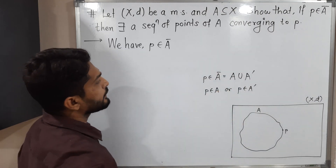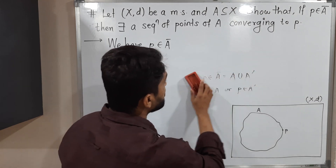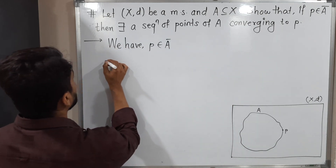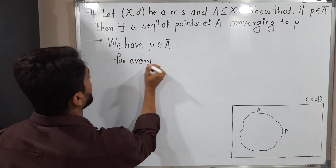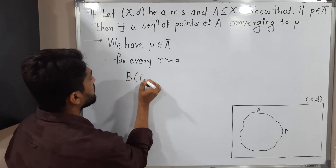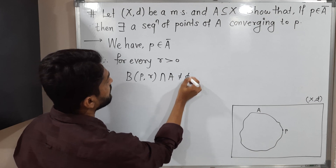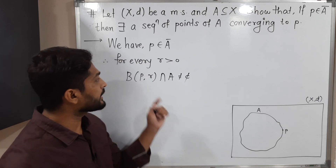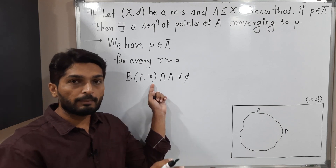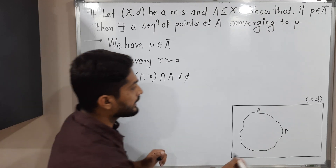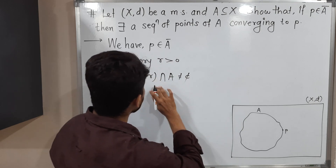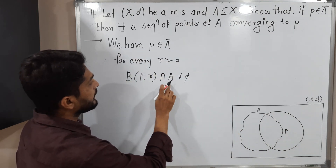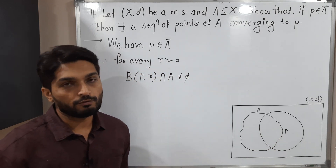A-bar has several definitions. There is one definition which is similar to the definition of a limit point, and that is the definition I am going to use here. If P belongs to A-bar, then for every r greater than 0, B(P, r) intersection A is not equal to empty. In the definition of a limit point, we remove the singleton P from that ball, but in the case of A-bar, we write the definition this way. It means if you draw any ball around P with radius r, then it definitely intersects A.